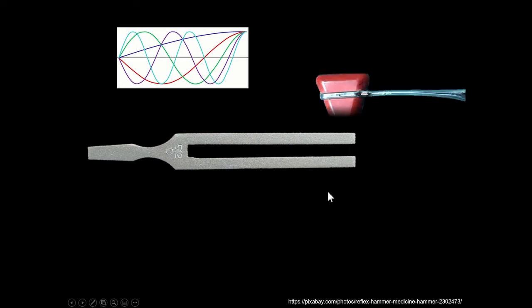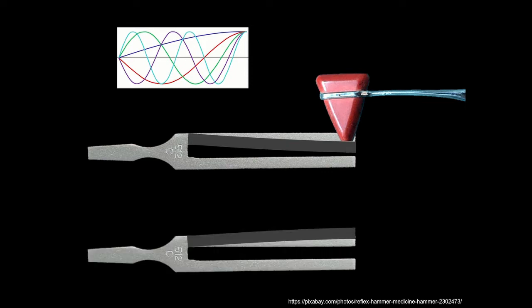A tuning fork — if you strike it and deform it past its equilibrium position, it's going to spring back and overshoot that equilibrium position, then oscillate back and forth between those two points at some frequency. This tuning fork would be 512 hertz, which is C.